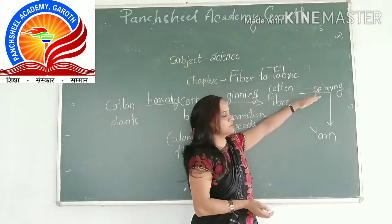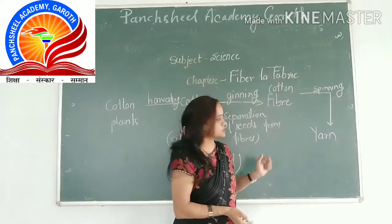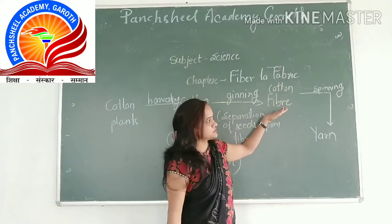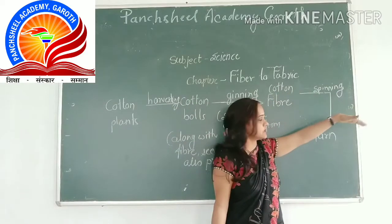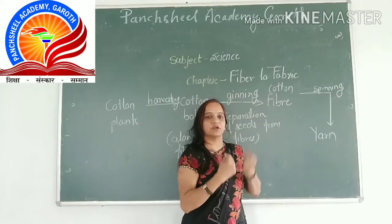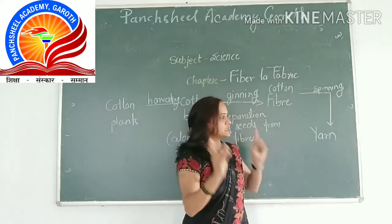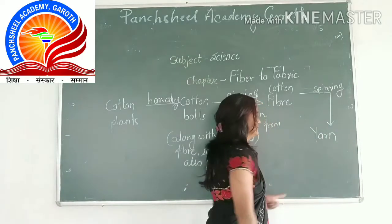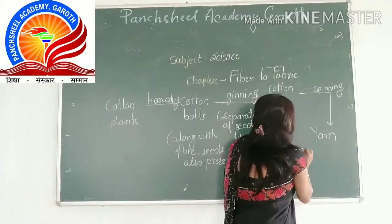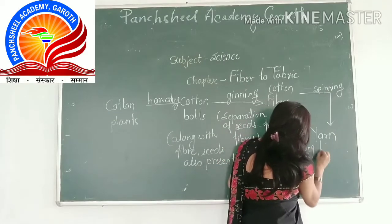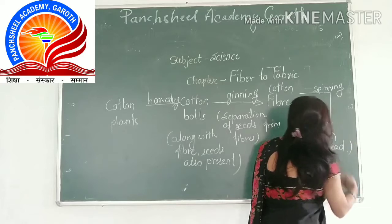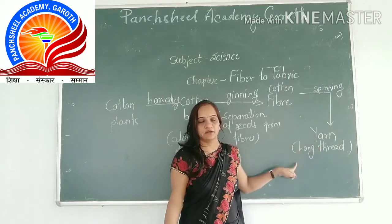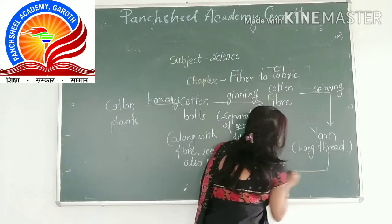Spinning is done with the help of spinning machines, a charkha, or a shuttle. By twisting cotton fibers, you will get yarn. Yarn is a long thread. After getting yarn, these yarns are processed for weaving.